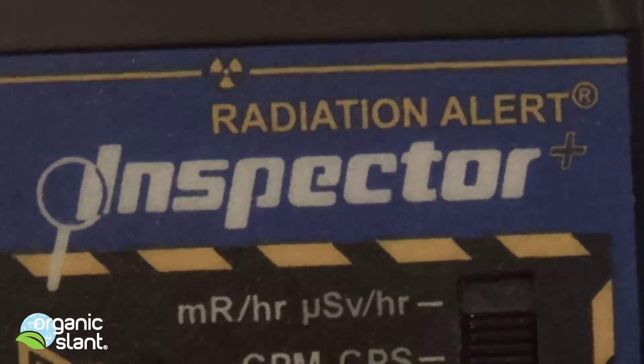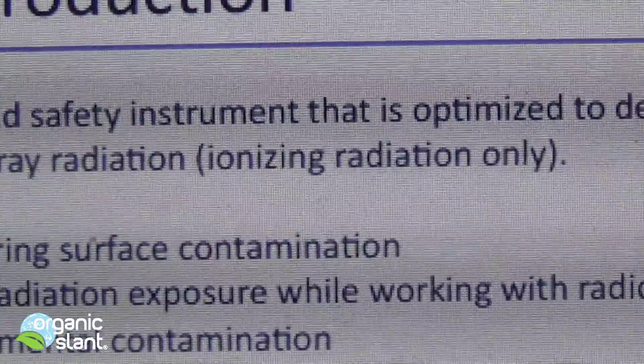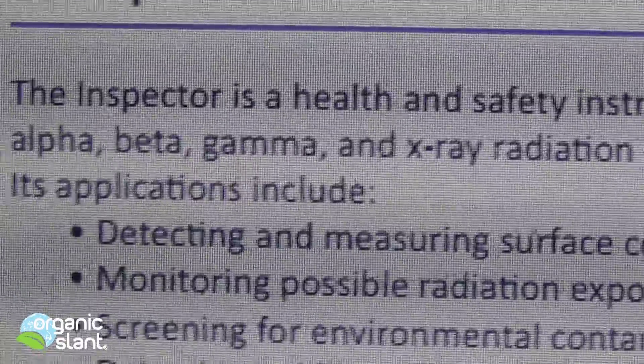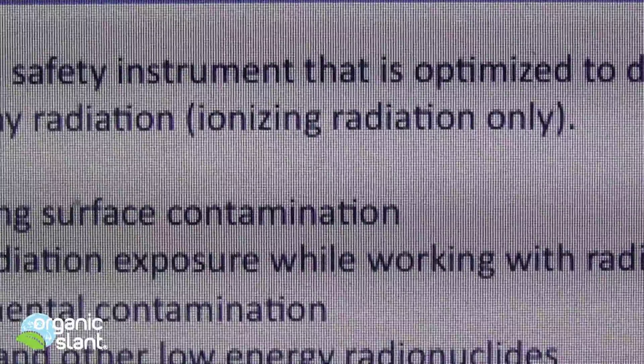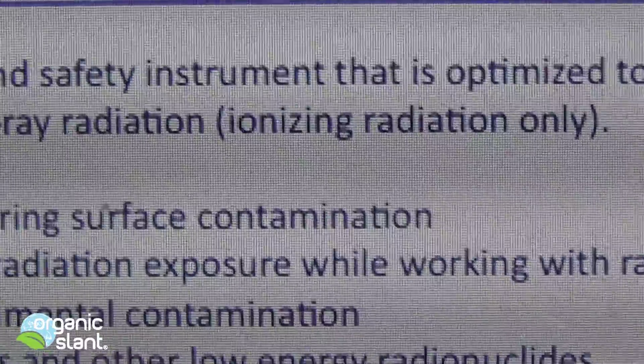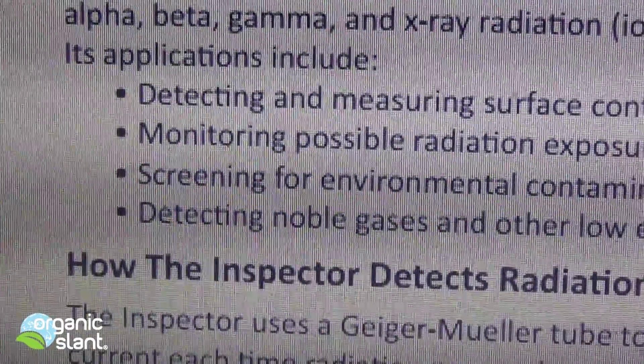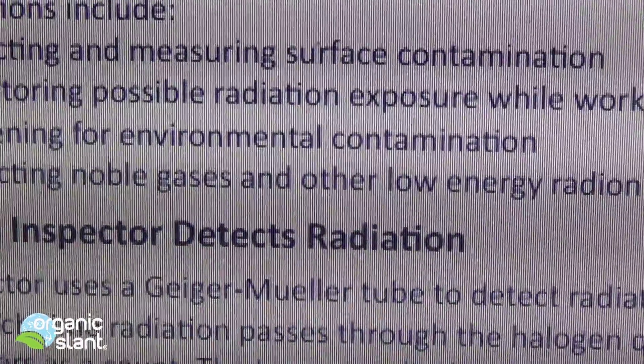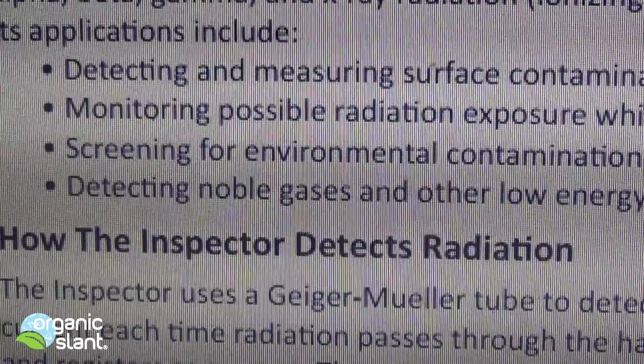I got the Radiation Alert Inspector Plus. Here's the manual for it. It says the inspector is a health and safety instrument that is optimized to detect low levels of radiation. It measures alpha, beta, gamma, and x-ray radiation. Ionizing radiation only. I think this is what I'm picking up. Its applications include, look at the last one, detecting noble gases and other low-energy radionuclides. These are noble gases that are in here.